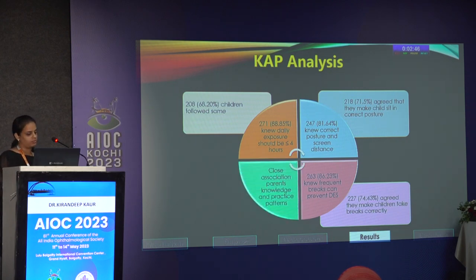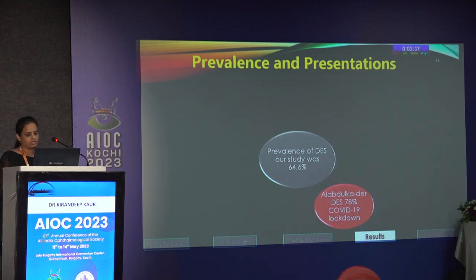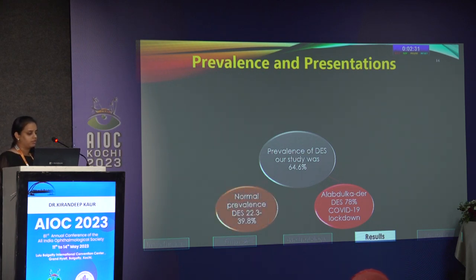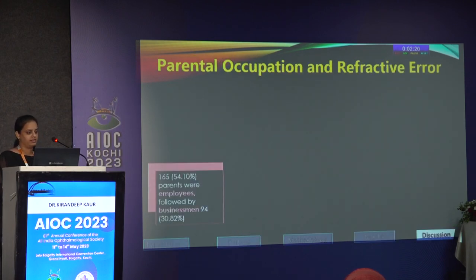We found a close association between the knowledge of parents and the practice patterns followed by their children. The prevalence of digital eye strain in our study was 64.6%. Abdulkar et al. during the COVID-19 lockdown found it as high as 78%. This is alarming compared to pre-COVID prevalences of 22.3 to 39.8%. The most common complaints in our cohort were headache, followed by eye pain and redness.